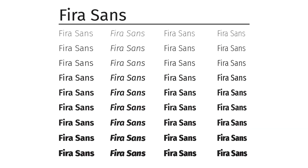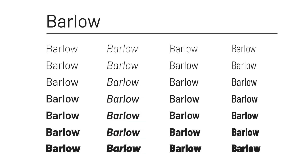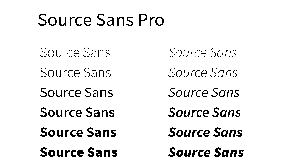Fira Sans has a wide range of weights and contains two condensed options. Barlow is a really versatile type family that includes regular, condensed, and semi-condensed versions. Source Sans is a great sans font that I use a lot, even though there's no condensed version — it's not on Google Fonts, but it's free.